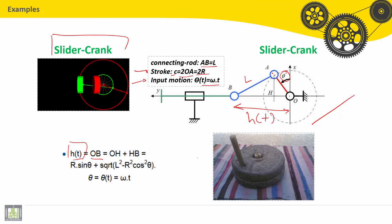So if we make a projection of the A joint here, the revolute between the crank and the connecting rod, the crank is OA and the connecting rod is AB. We find here H. So OB is equal to OH plus HB.